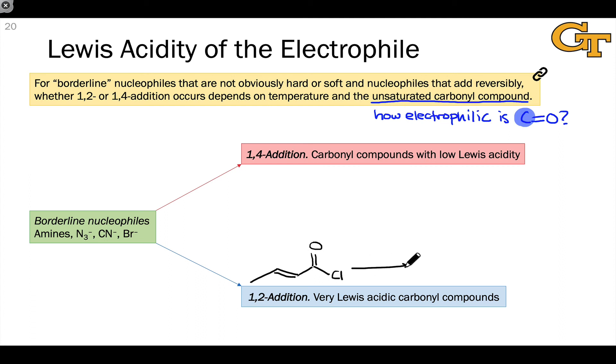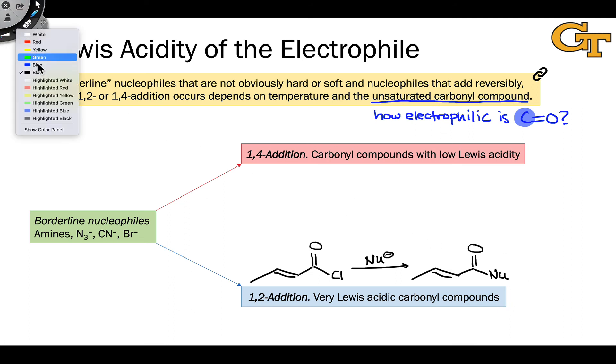So for example, 1,2 addition tends to be favored for very Lewis acidic carbonyl compounds like acyl chlorides. Here, the carbonyl carbon is profoundly Lewis acidic. And the nucleophile tends to add at that carbon ultimately to give products of nucleophilic acyl substitution after the elimination of chloride. This is entirely driven by that strong electrophilicity, that high Lewis acidity of the carbonyl carbon in the acyl chloride.